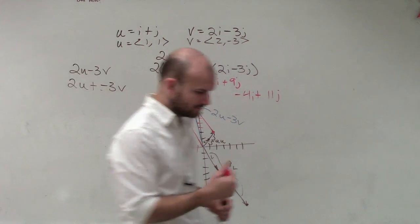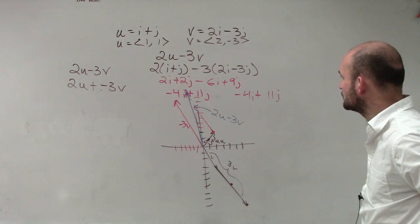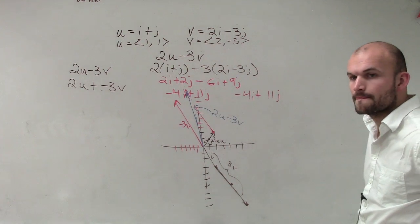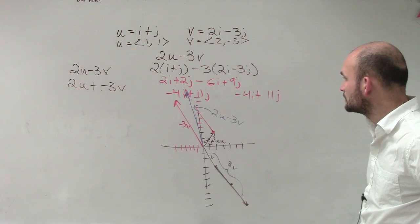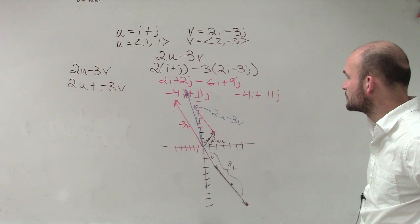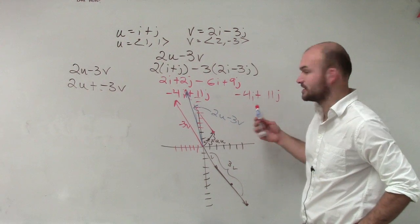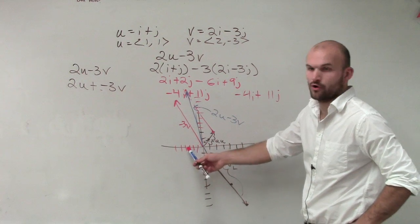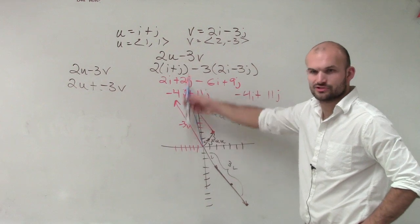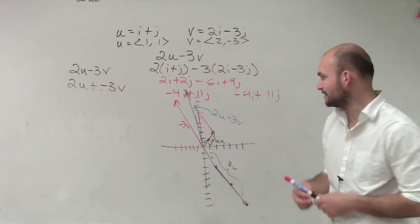So I know negative 4i plus 11j is the resultant, but you're going to plot like 2i plus 2j and then negative 6i plus 9j to figure out the resultant? Yeah. Do I just combine these together, negative 4i and 11j? And yeah, you could just graph negative 4, 11 to get your answer.